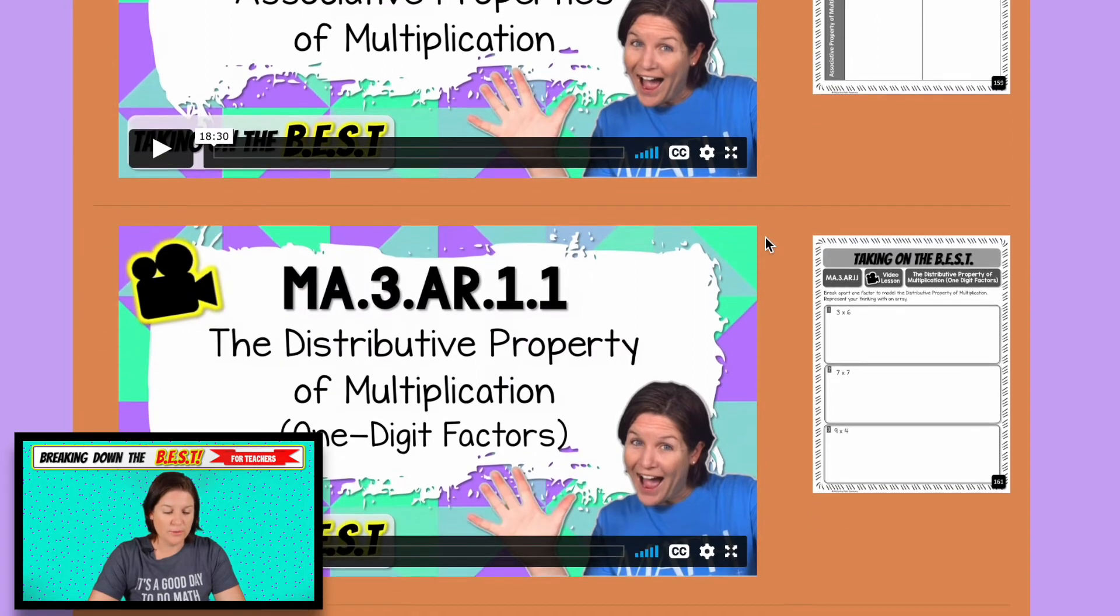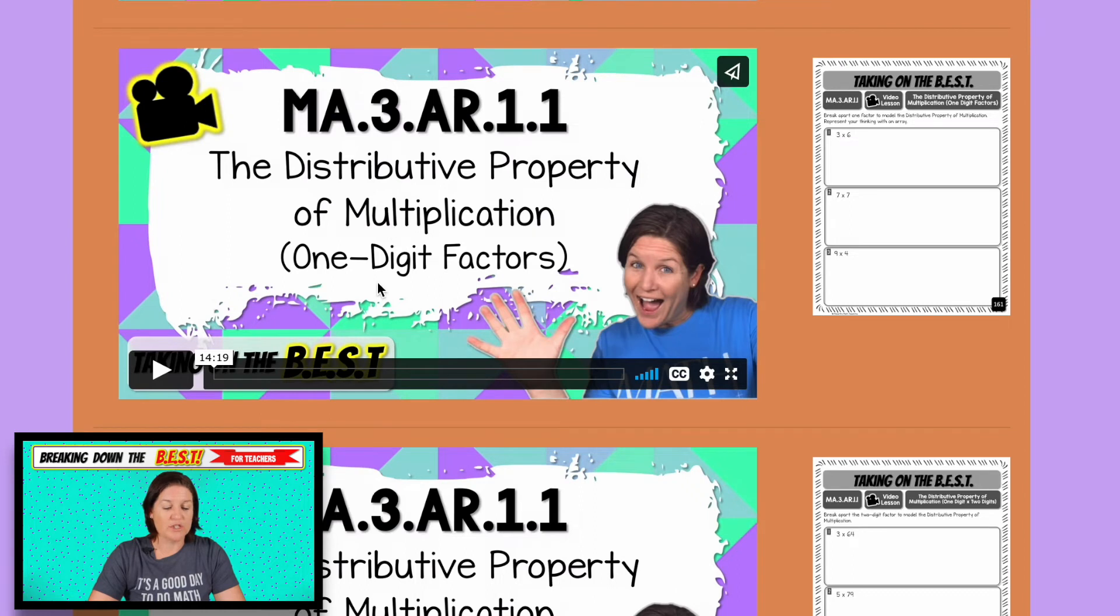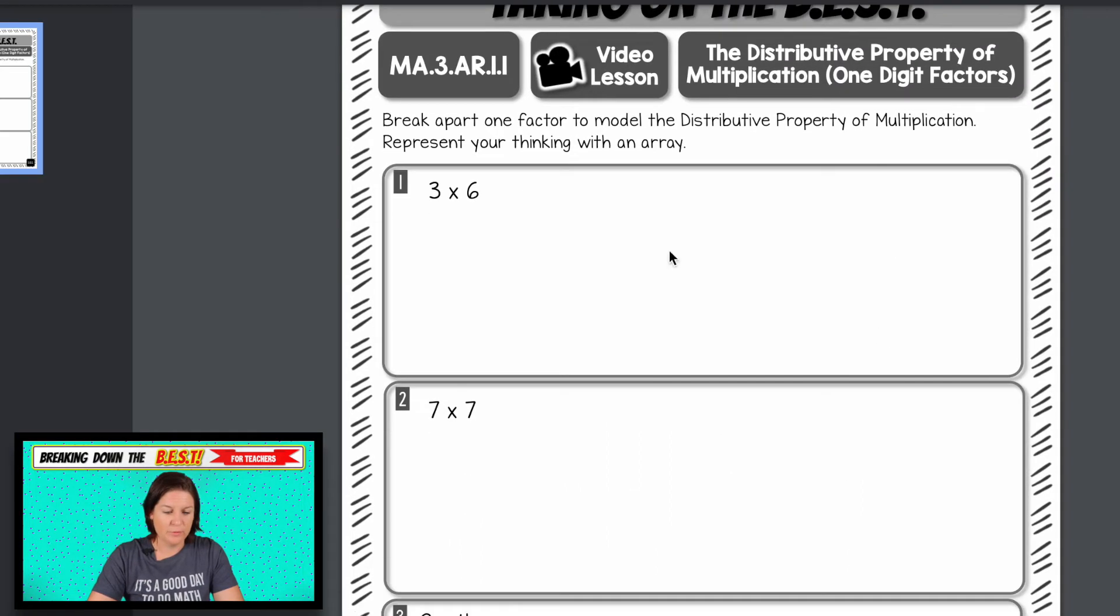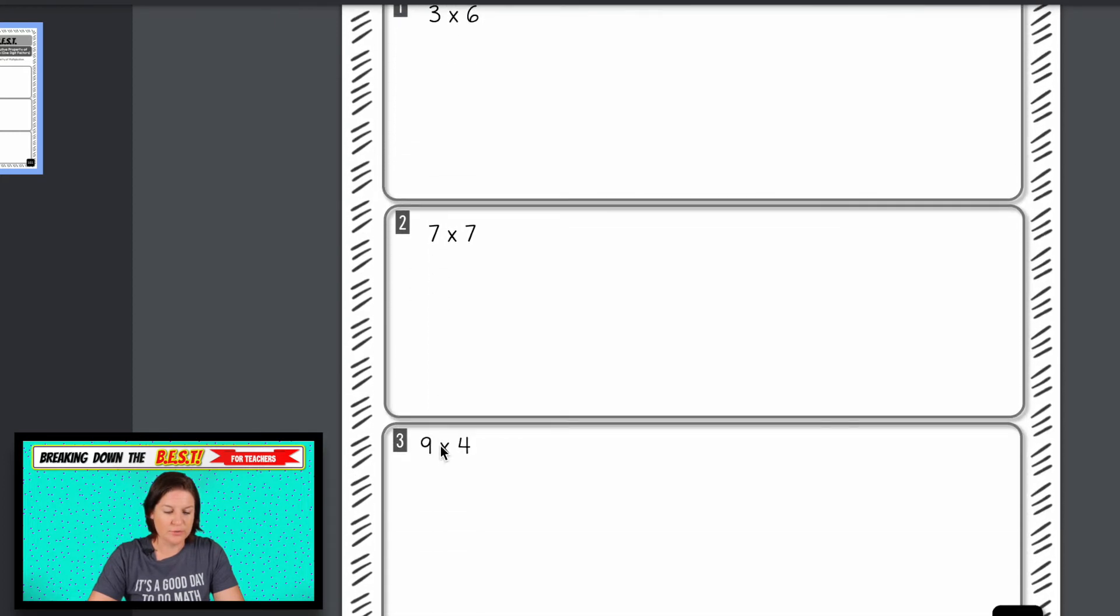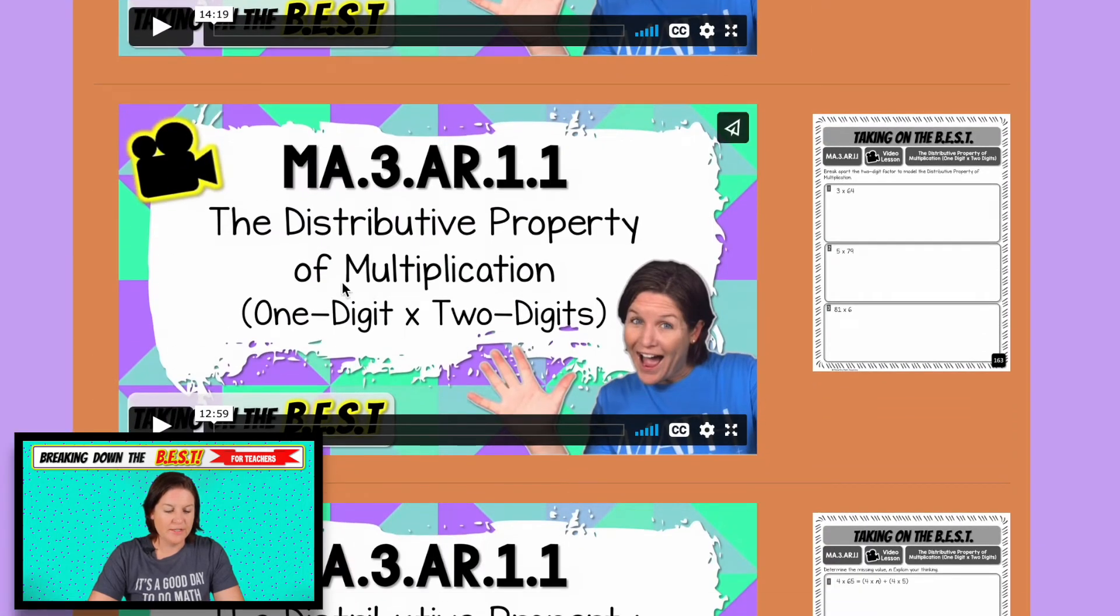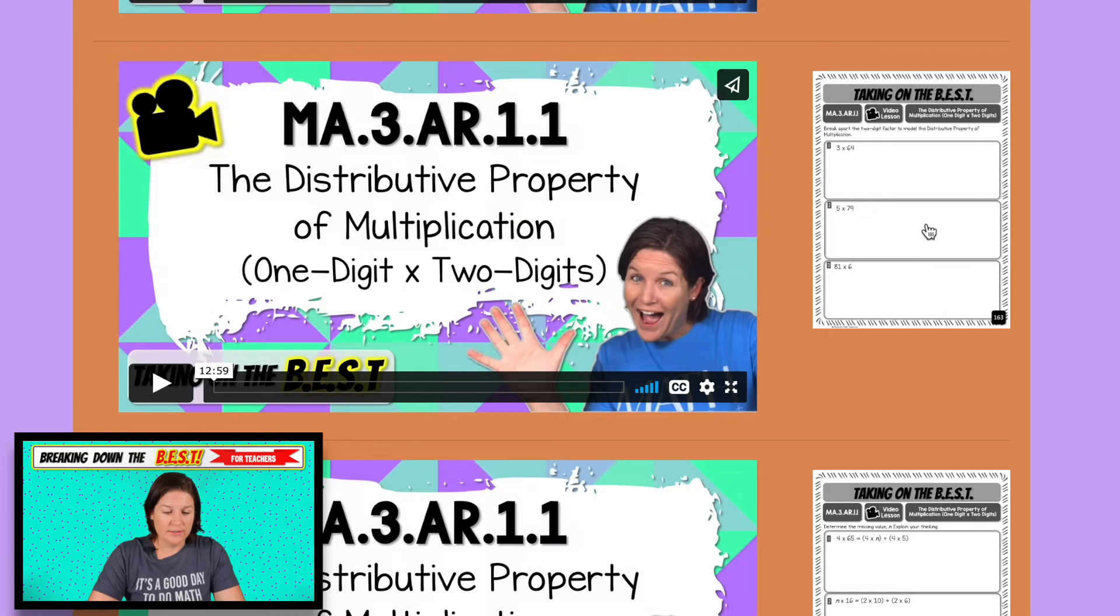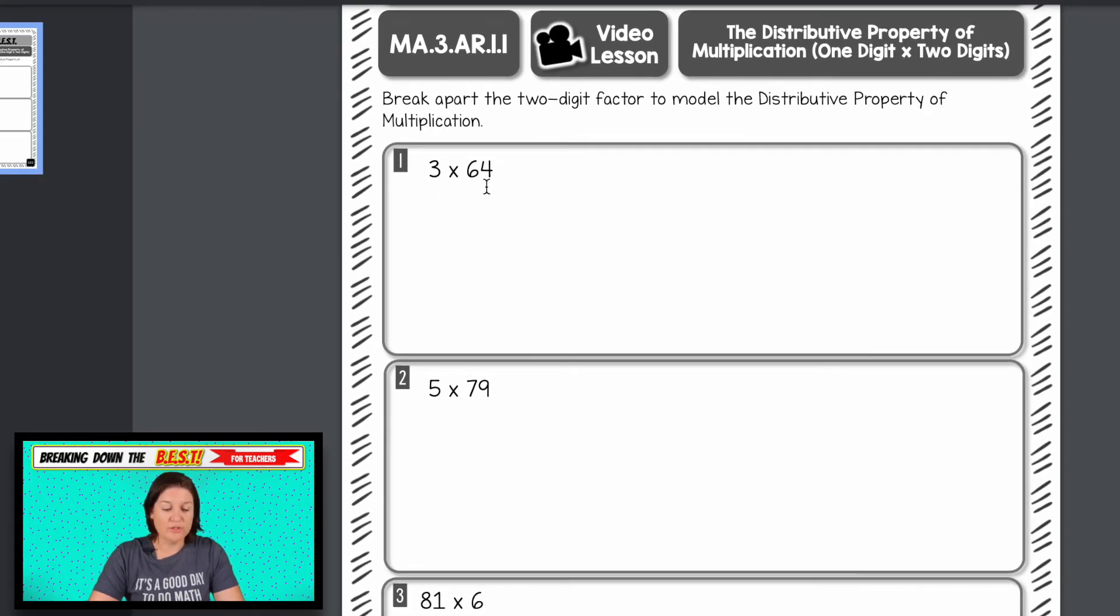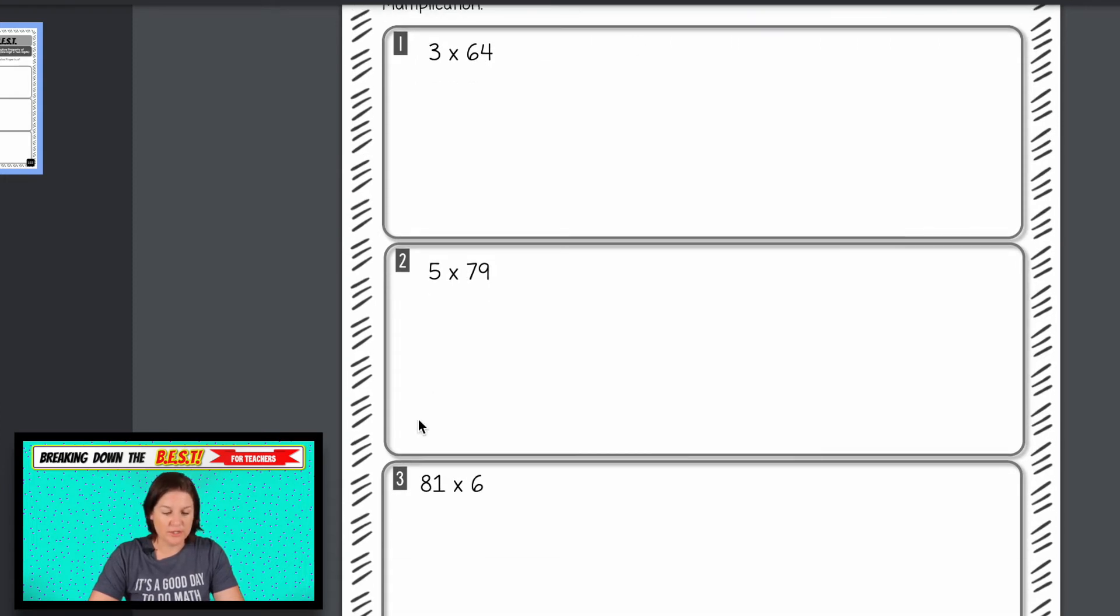We walk through all of it in the video. Students just take notes as we go. We have the distributive property of multiplication with one digit factor. So one digit times one digit. And this is what it looks like here. We'll be representing our thinking with an array and breaking apart one factor using those expressions.